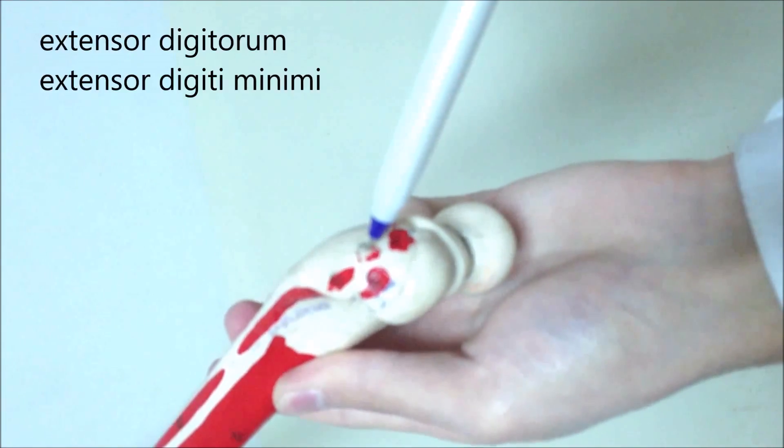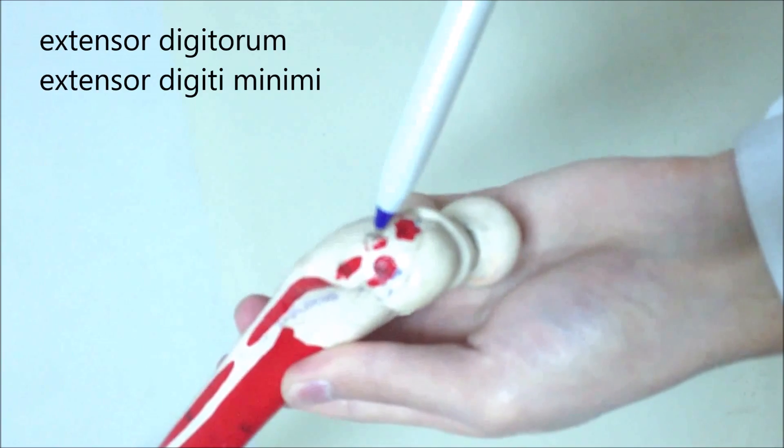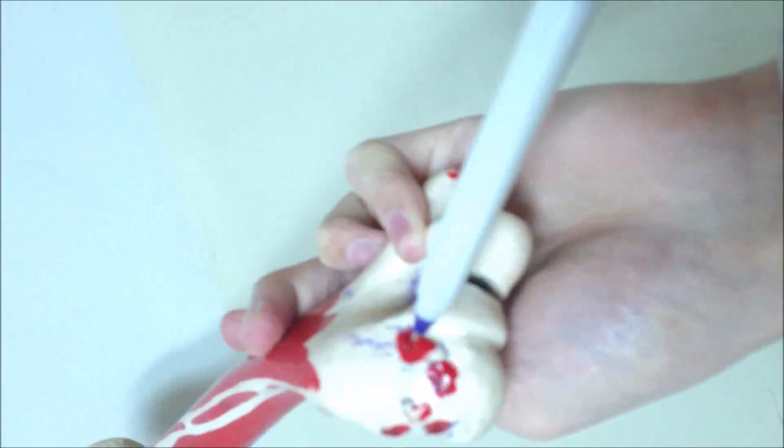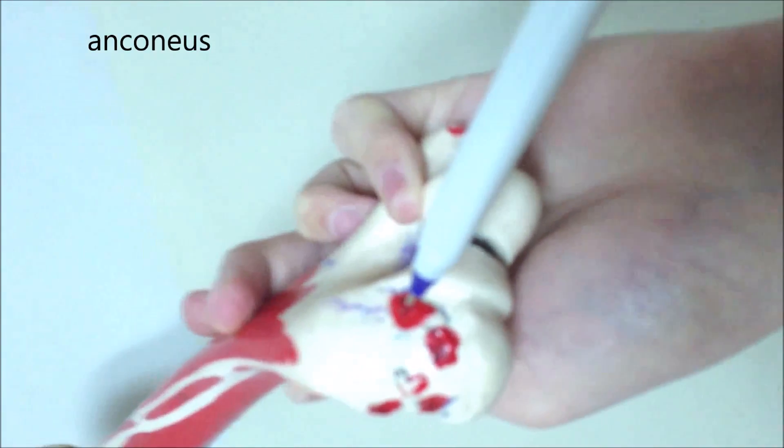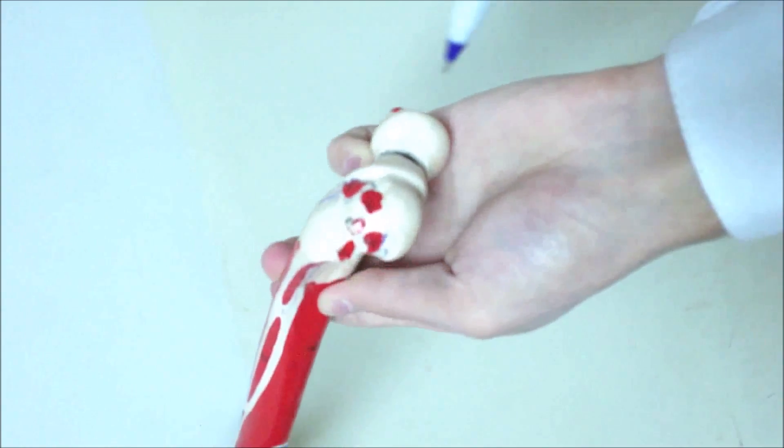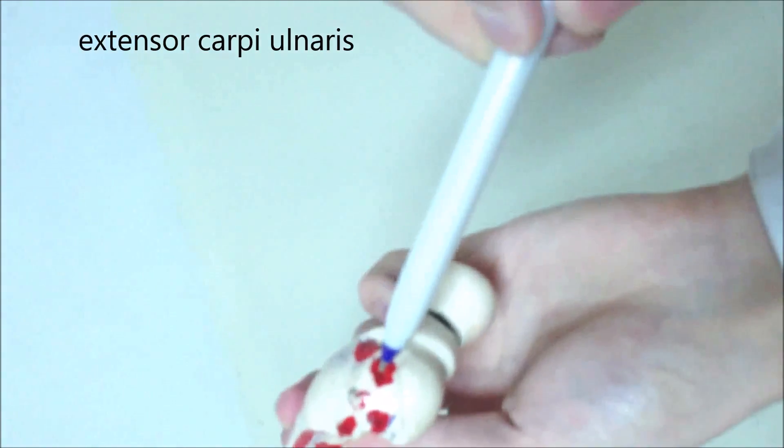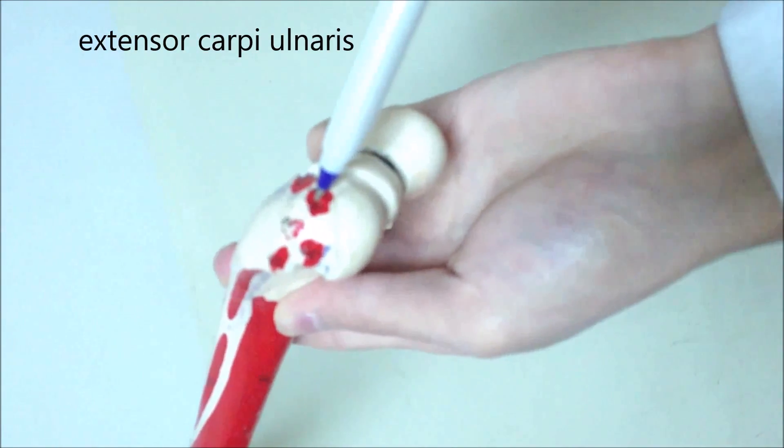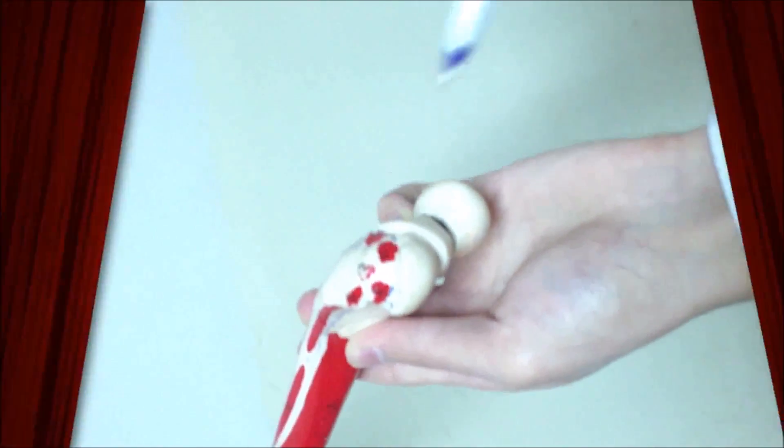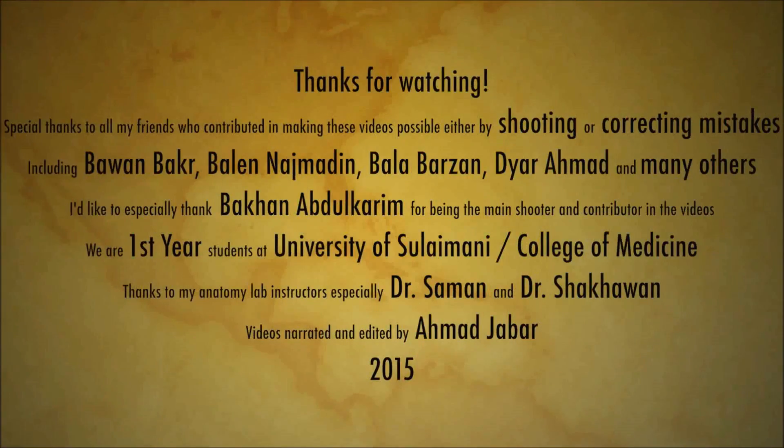This is extensor digitorum and extensor digiti minimi. This is anconeus. And this is extensor carpi ulnaris.